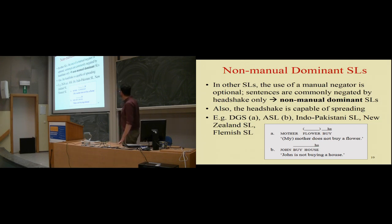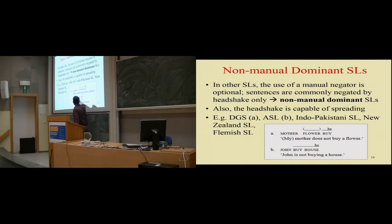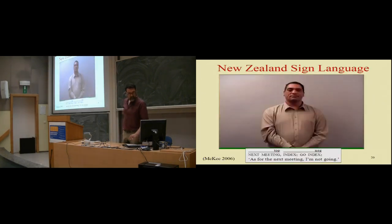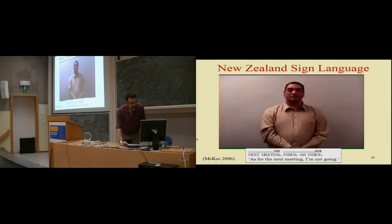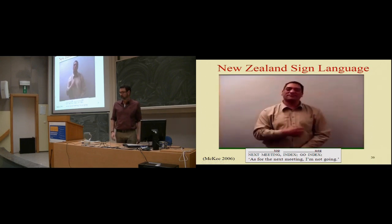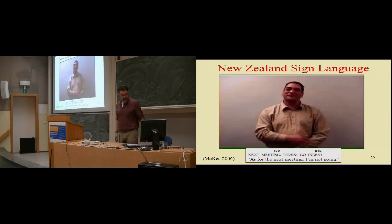In ASL and Catalan Sign Language, the head shake can co-occur only with the particle. But in German Sign Language, that pattern is ungrammatical. Conversely, without the manual particle, in German and Catalan Sign Language the head shake can co-occur only with the verb, while in ASL this is ungrammatical. In ASL, if you drop the negative particle, the head shake must spread over the object as well. So even within the non-manual dominant group, there are significant differences.